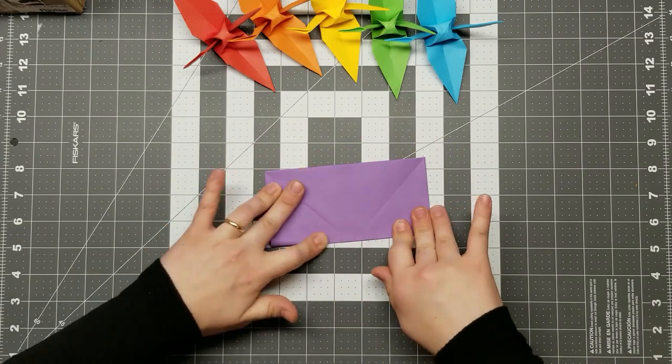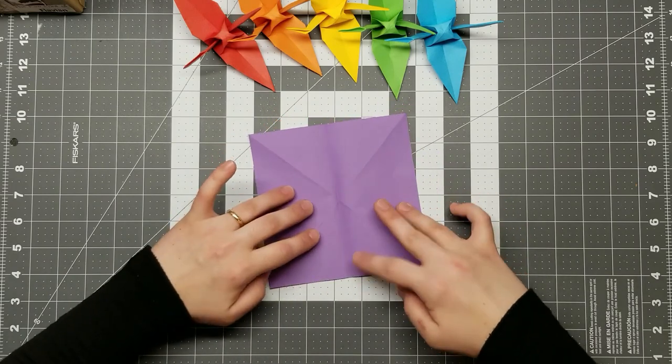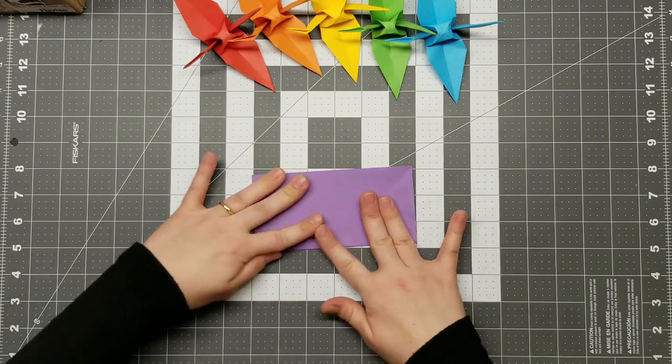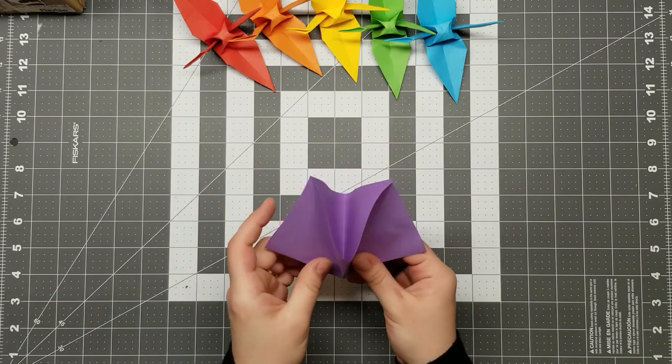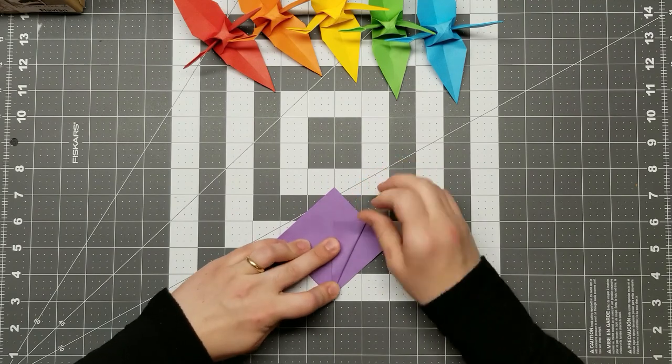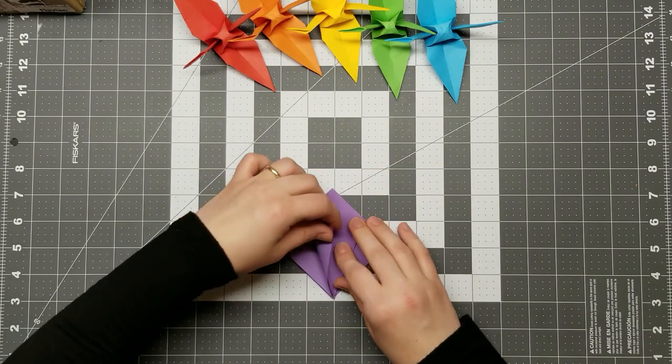The world record for the smallest crane belongs to assistant professor Watanabe at Niigata University, who folded a crane from a square measuring only one-tenth of a millimeter by one-tenth of a millimeter. He used a microscope and sewing needle to fold it at age 82 back in 2004.